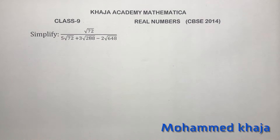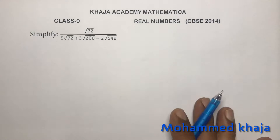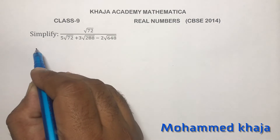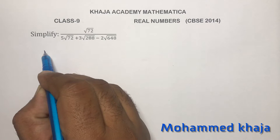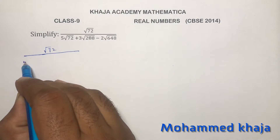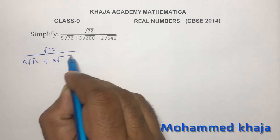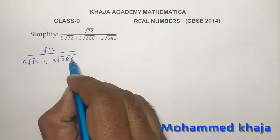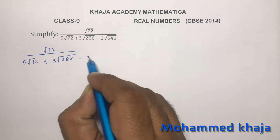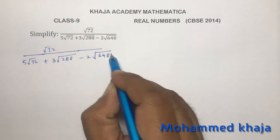Simplify √72 divided by (5√72 + 3√288 − 2√648).